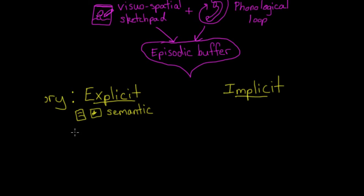A second type of explicit memory is called episodic memory, which is memory for events, like your last birthday party. Just like a TV episode is a sequence of events, your episodic memory stores event-related memories.